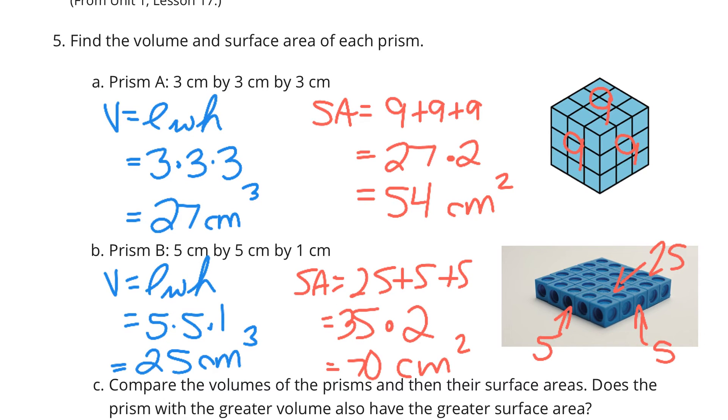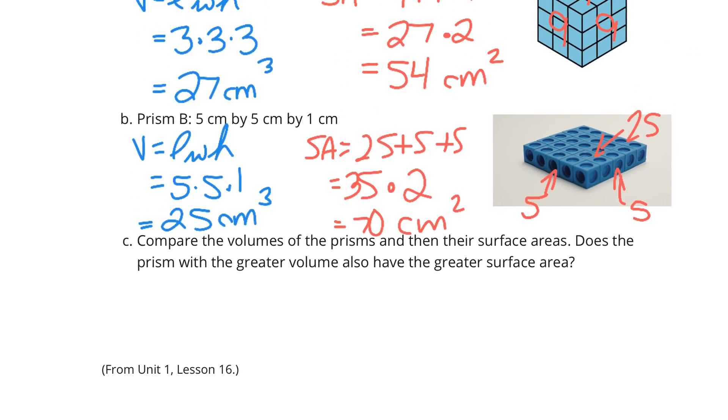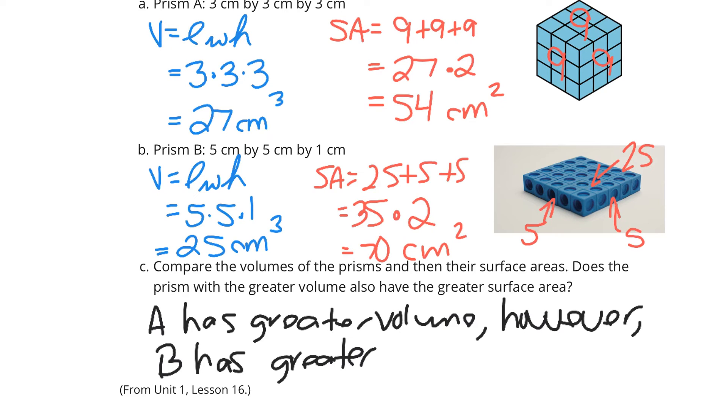Now, in C, compare the volumes of the prisms and their surface areas. Does the prism with the greater volume also have the greater surface area? Well, let's see. A has greater volume. However, B has the greater surface area, since 70 is bigger than 54.